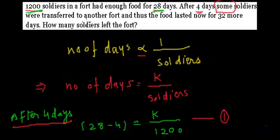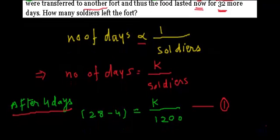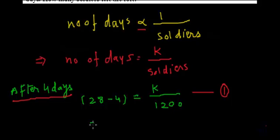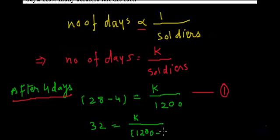After four days, some soldiers were transferred to another fort and now the food will last for 32 more days. We don't know how many soldiers were transferred, so we assume n soldiers were transferred. The remaining soldiers will be 1200 minus n, and the food lasts 32 days. Let's call this Equation 2.